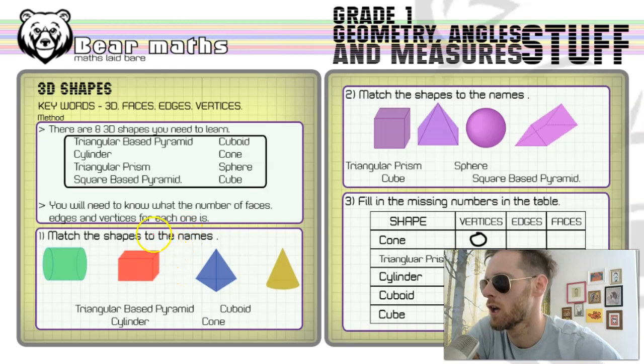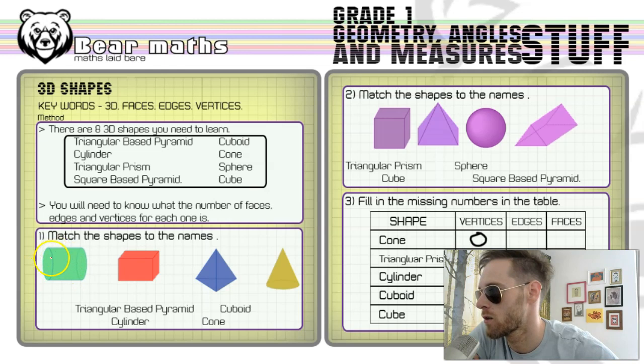So match the shapes to the names in question number one. This shape here is a circular based prism or circular prism, but it has a special name—it's a cylinder. I'm just going to match that one to that one there.